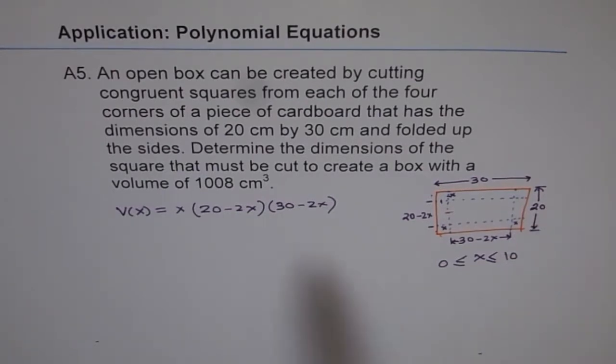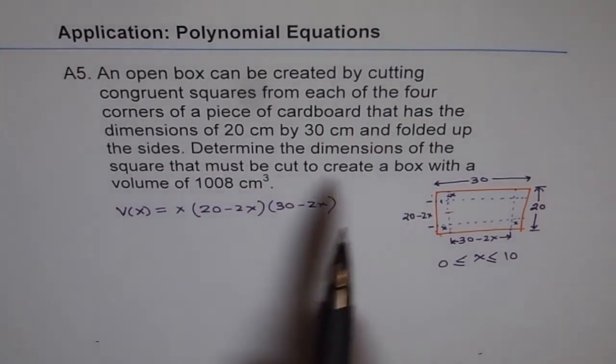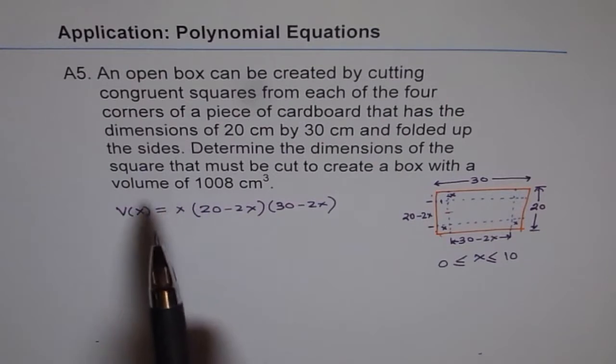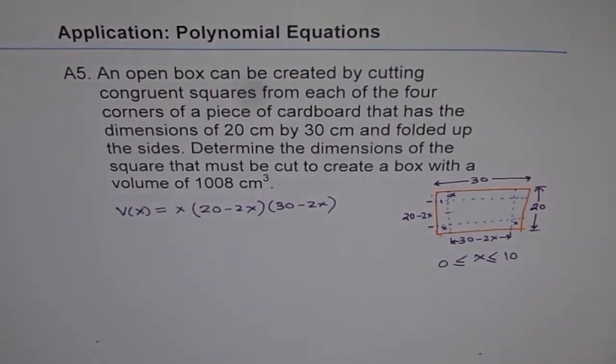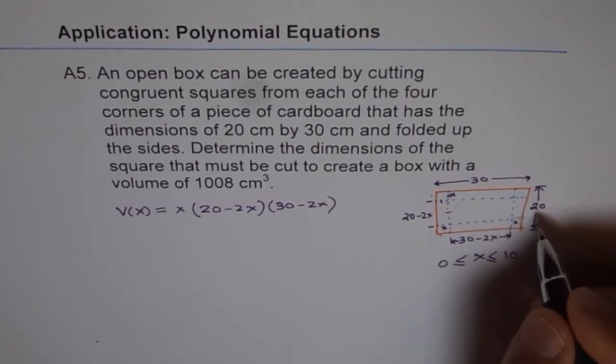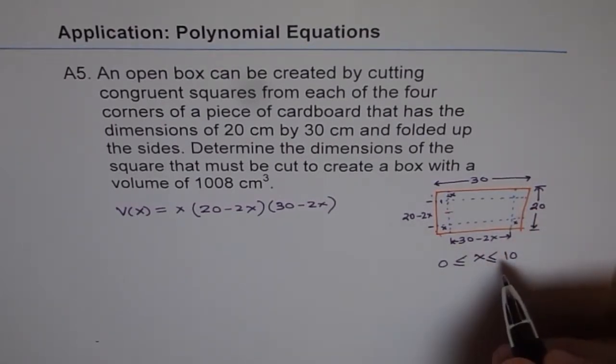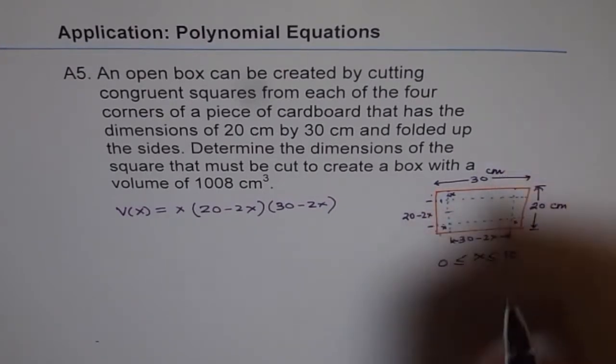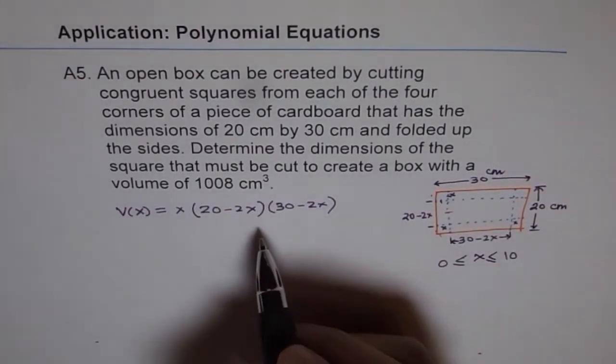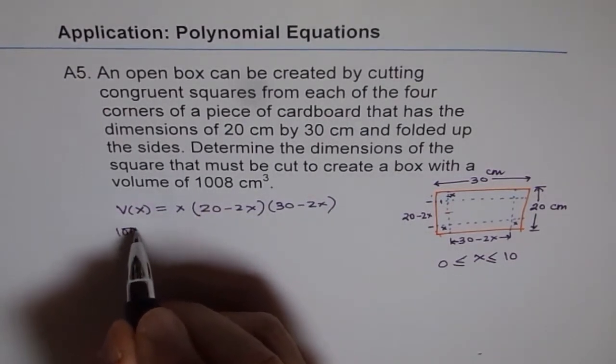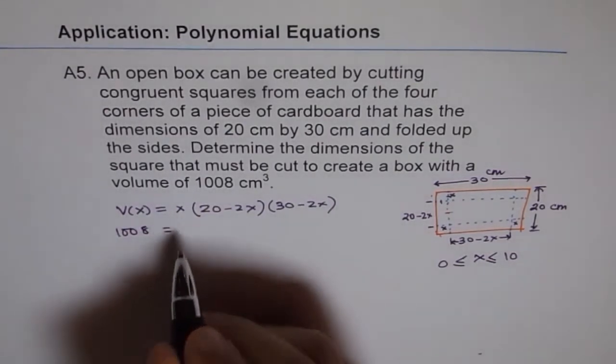Now the question is: Determine the dimensions of the square that must be cut to create a box with a volume of 1008 cm³. Now these units are in centimeters, so the volume will be in centimeters cubed. Now let me write centimeter for each.